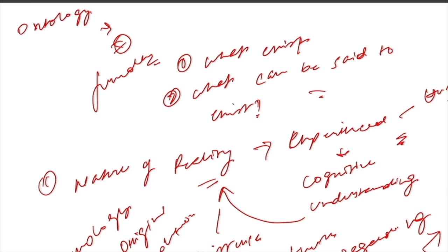Another way ontology intersects with anthropology is through the study of cultural practices and social structures. Anthropologists are interested in understanding how social structures and cultural practices shape people's experience of the world and how these are linked with wider historical and structural processes. Ontological analysis can help reveal the underlying assumptions and beliefs that shape cultural practices and social structures.